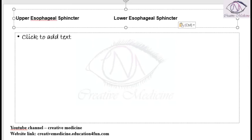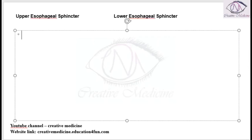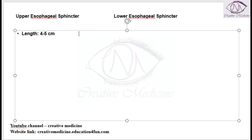The differences between upper esophageal sphincter and lower esophageal sphincter. First, the length of the upper esophageal sphincter is around 4 to 5 centimeters, whereas the length of the lower esophageal sphincter is around 5 centimeters.